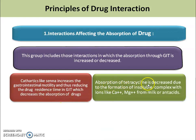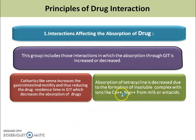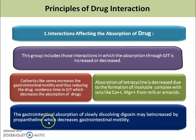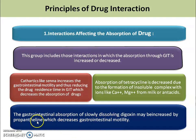Second, absorption of tetracycline is decreased due to the formation of insoluble complexes with ions like calcium, magnesium, or milk, or antacids. Tetracyclines form insoluble complexes with calcium and magnesium ions, so absorption of tetracycline is low in their presence. Third, gastrointestinal absorption of slowly dissolving digoxin may be increased by propantheline, which decreases GIT motility. If GIT motility is decreased, then absorption will be increased.